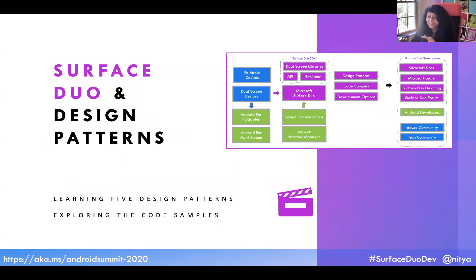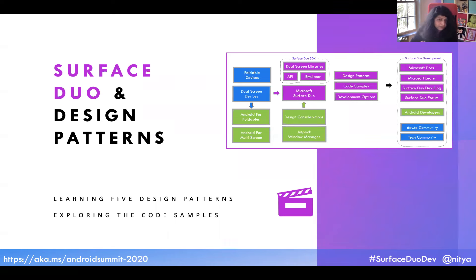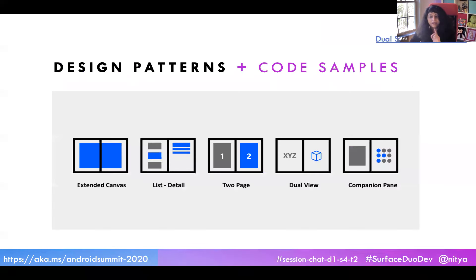Last but not least, Surface Duo design patterns. Hopefully you now understand you can download the SDK, install the emulator, and have access to APIs and libraries for default classes and configuration state information. Based on user studies looking at how people use different apps, the Surface Duo team identified five design patterns as a starting point: extended canvas, list detail, two page, dual view, and companion pane. All have links to code samples.